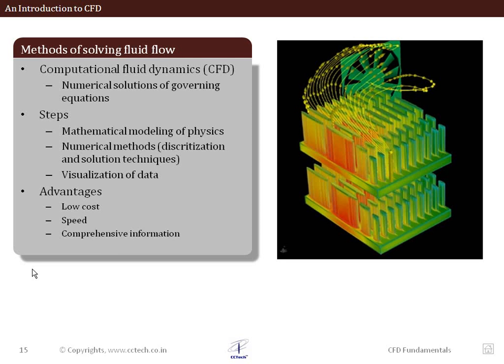That's why we have CFD. In CFD, we have the mathematical model clearly defined — that's the physics — and these physics equations, which are usually partial differential equations, are being solved through numerical methods. They are not being solved analytically but using numerical methods, with the assumption that we can neglect some higher-order terms. We use a computer to solve them and we end up having a CFD result: a numerical solution of your physics.